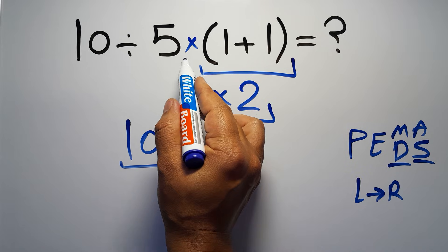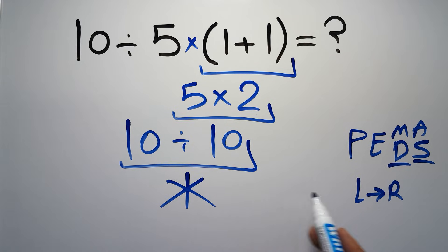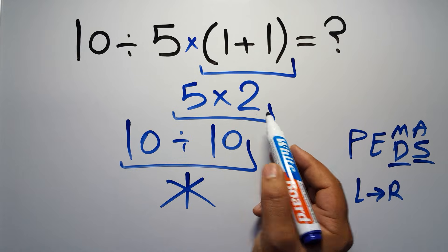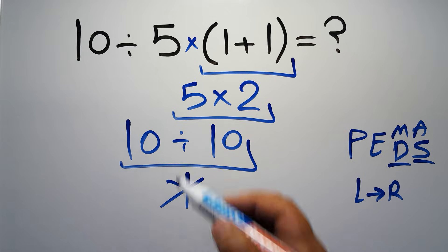So according to PEMDAS, first we have to do this parentheses, then this division, and finally this multiplication. If we do this multiplication before this division, it is wrong.